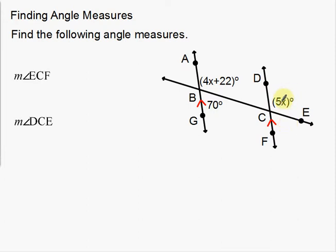We have 5X degrees over here, 4X plus 22 degrees here, and then down here we have 70 degrees. I want to use the actual angle measure first — that's 70 degrees — to see if I can figure out what ECF is. You want to use that first because it's the easiest. You want to try to stay away from these expressions if you can.